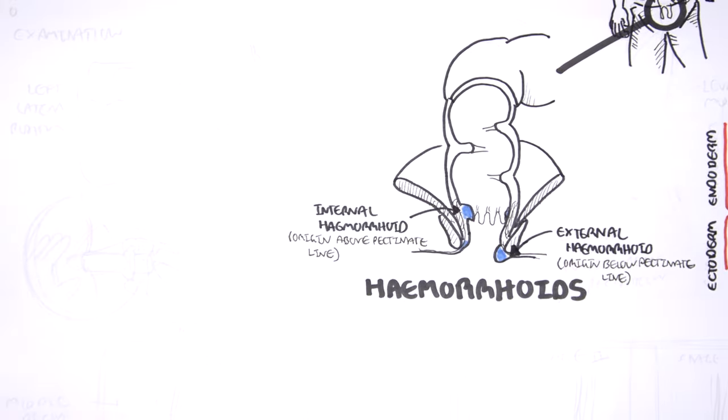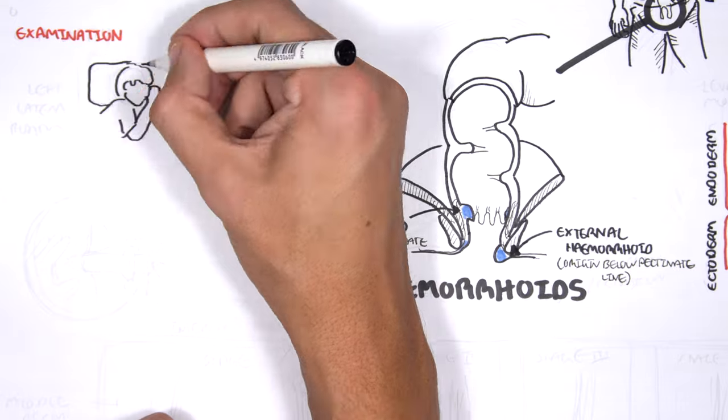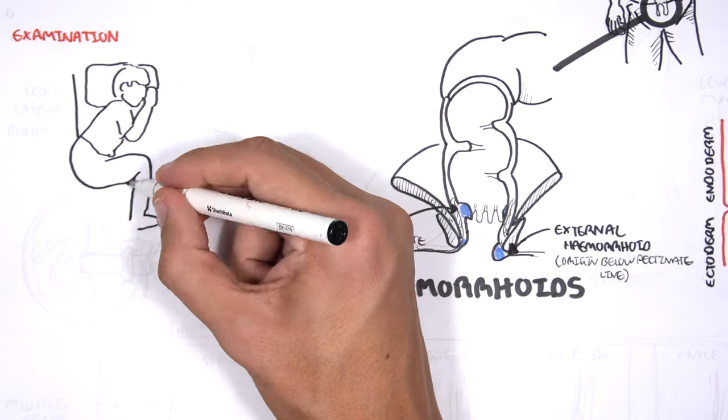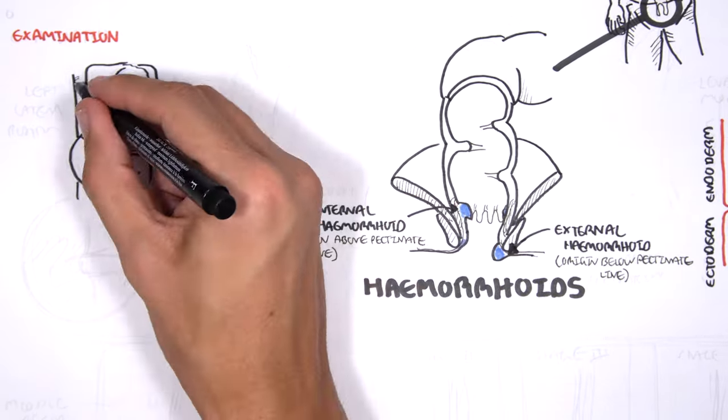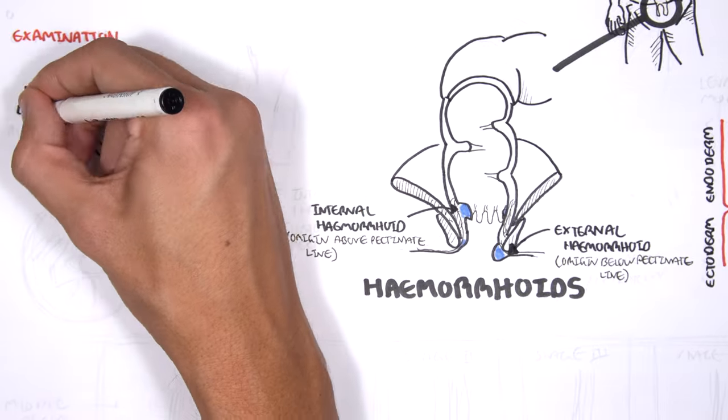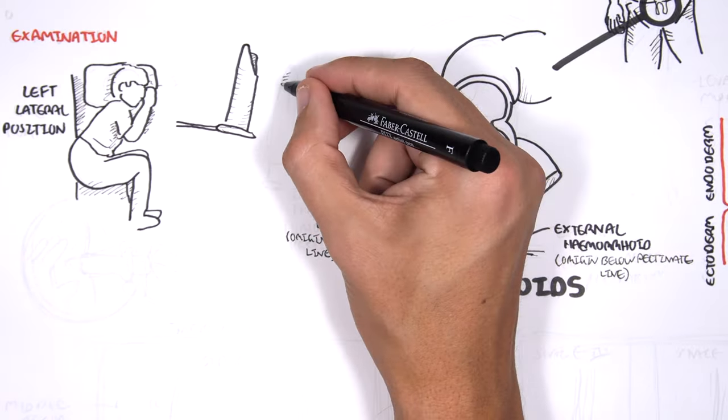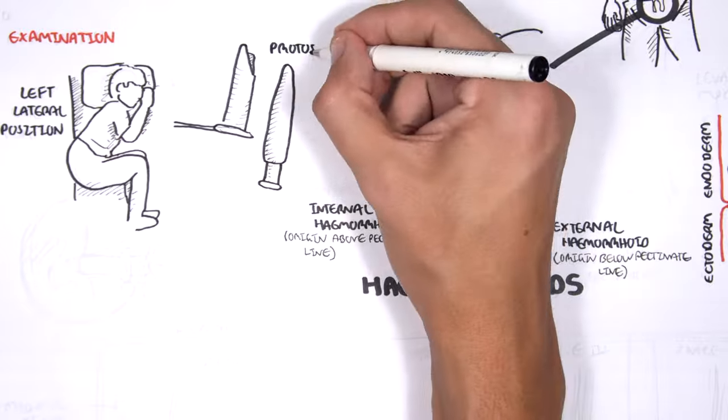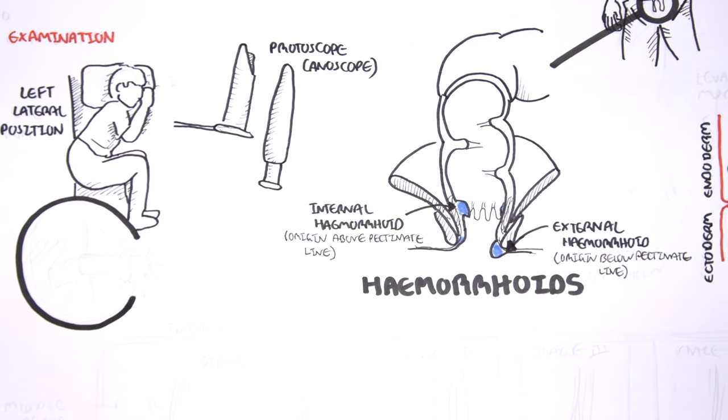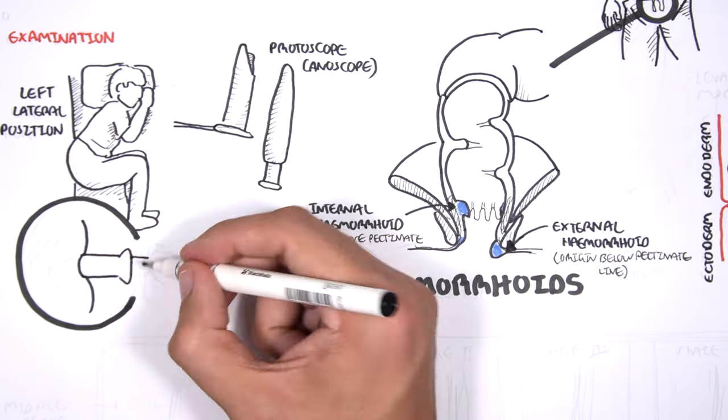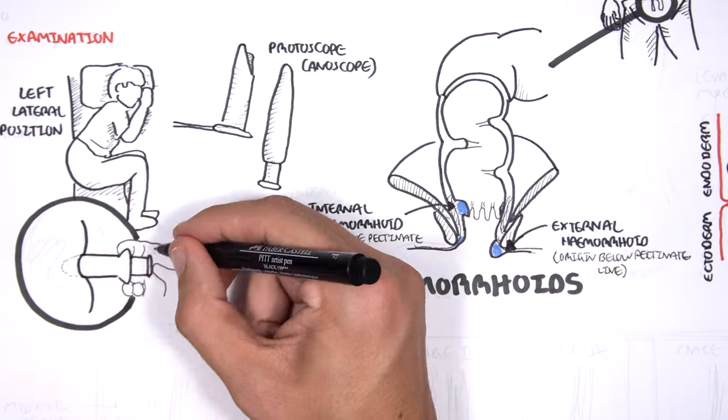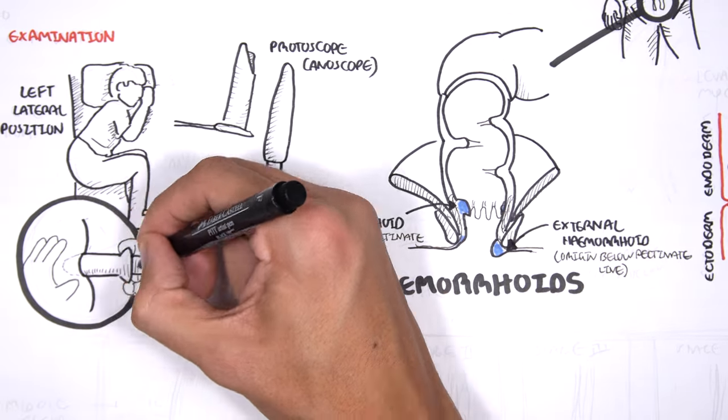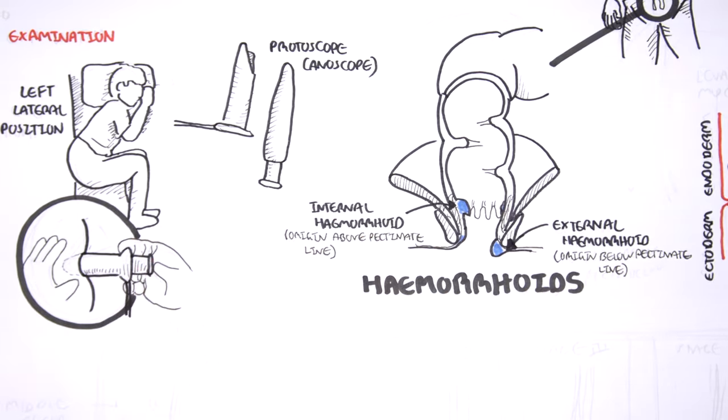We learned about the signs and symptoms and the risk factors of hemorrhoids. On examination, we want to position the patient in a left lateral position with knees up to the chest to expose the anal area. On general inspection, an external hemorrhoid may be visible. However, the use of a proctoscope or an anoscope might be useful to examine for internal hemorrhoids.